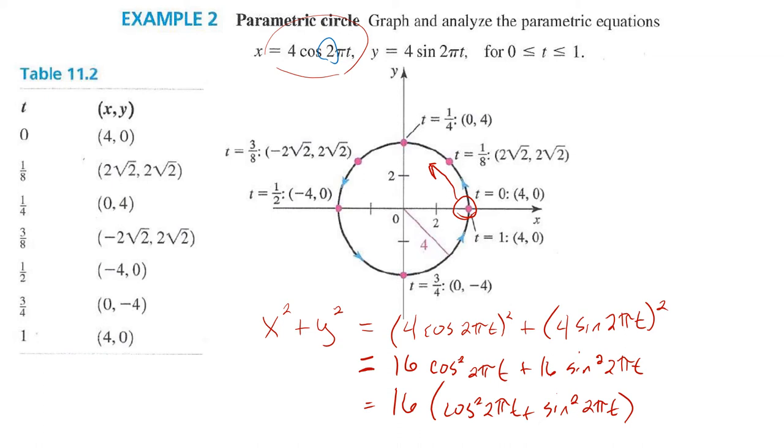We could square these to get 16 cos²(2πt) + 16 sin²(2πt). Factor out the 16. Now we get cosine squared 2πt plus sine squared 2πt. Now, if we remember back to our identities, one of those important identities is the Pythagorean identity, which said sine squared of an angle plus cosine squared equals 1. These angles are the same, 2πt. So this is just 1, which means x² + y² = 16, which is r², because it has a radius of 4. So that's a slightly different way of writing the regular equation from the parametric equation, specifically when it's not going to be a function.